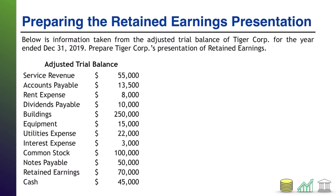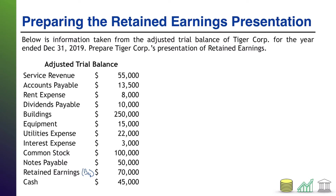Just to point out — to help you so you don't miss anything when you're trying to work this out — it says that this information has been taken from the adjusted trial balance of the company. If you're not familiar with an adjusted trial balance, that is just a collection of the ending balances in your company's accounts. But there is one exception to that, and that is retained earnings. On the adjusted trial balance, retained earnings is the beginning balance. Everything else is an ending balance. So I believe that is all the advanced information you need to solve this problem. Take a moment, pause the video, see if you can prepare the presentation of retained earnings. And when you're done, unpause and I will walk you through the solution.